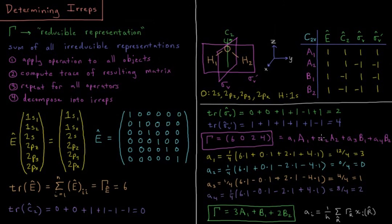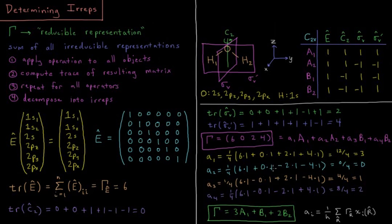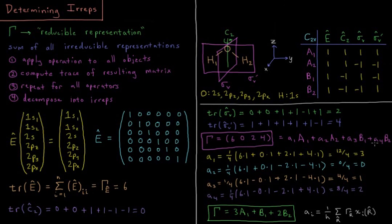For A2: (1/4)(6×1 + 0×1 + 2×(-1) + 4×(-1)) = 0/4 = 0. For B1: (1/4)(6×1 + 0×(-1) + 2×1 + 4×(-1)) = 4/4 = 1. So there is 1 B1 in this reducible representation. For B2: (1/4)(6×1 + 0×(-1) + (-2)×(-1) + 4×1) = 8/4 = 2.